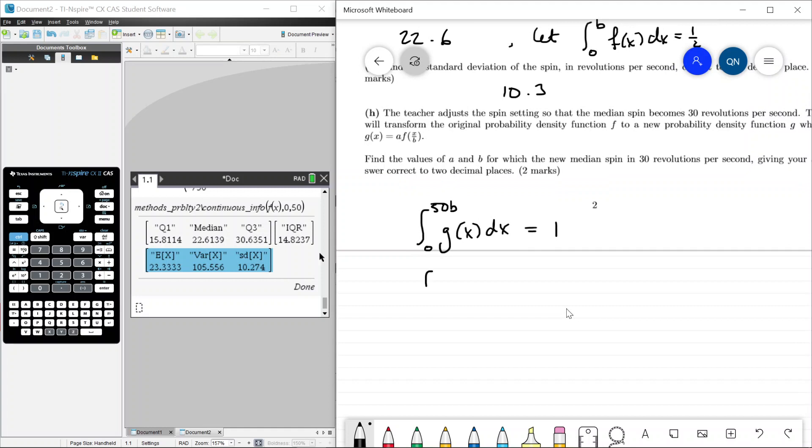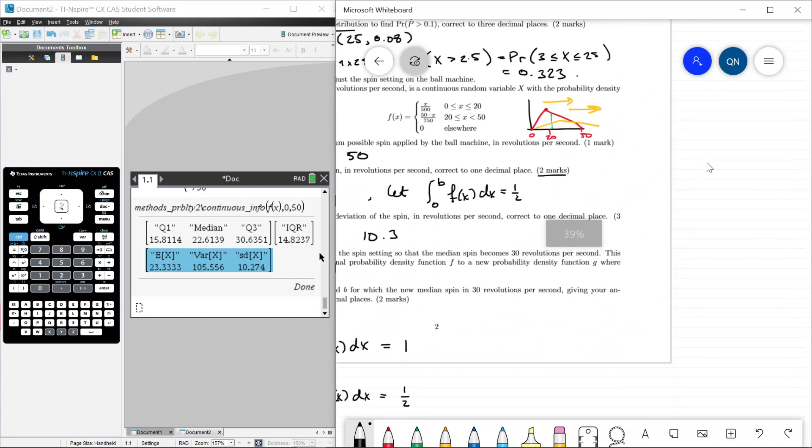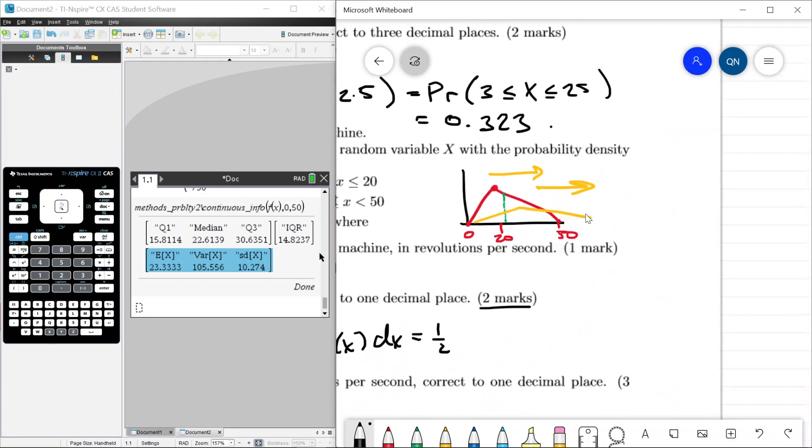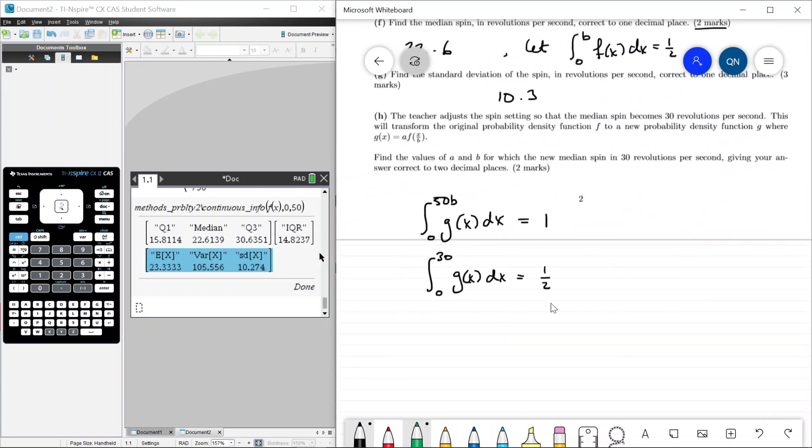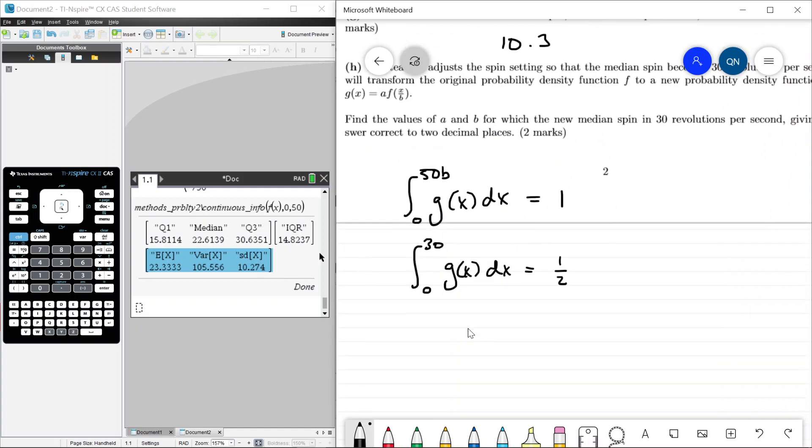What else do we need? We also need that the median is 30. What would that look like? Well, we know that the integral from 0 to 30 of g of x dx must be equal to a half. Why does that make sense? Well, the yellow graph is g of x. He is 30. We want this to be the new median. So everything below here, that area must be a half. That's the definition of the median. So we can do this. We're going to solve these two equations simultaneously on the CAS for a and b.